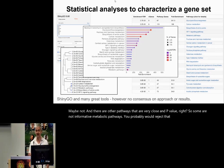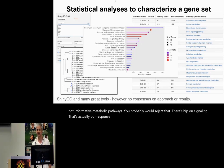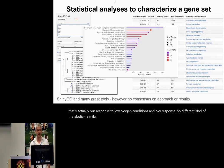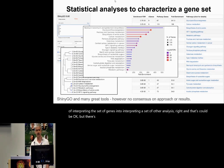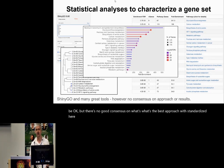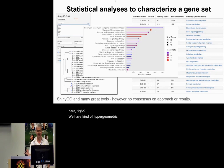There's HIF1 signaling — that's actually a response to low oxygen conditions, hypoxic response, a different kind of metabolism with similar genes involved. So it seems like we've turned the problem of interpreting a set of genes into interpreting a set of other analyses. There's no good consensus on what's the best approach or what's standardized. We have hypergeometric tests used very popularly, but with known biases and other issues.